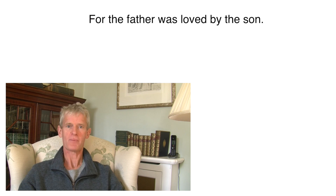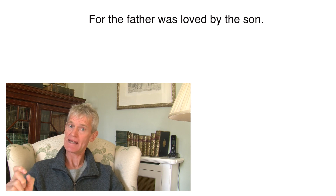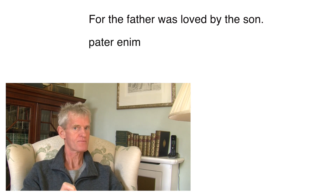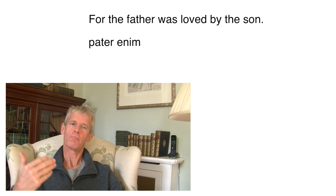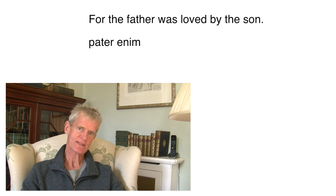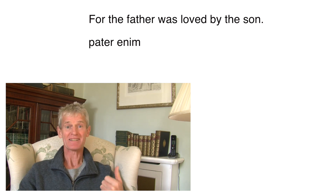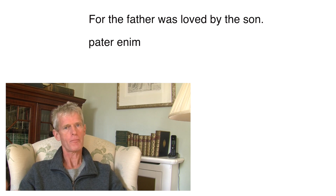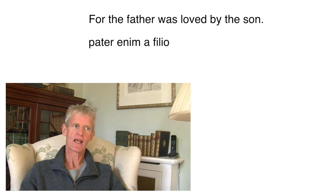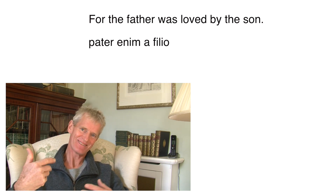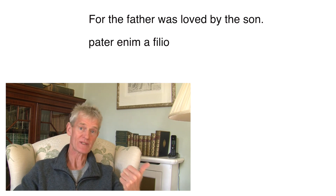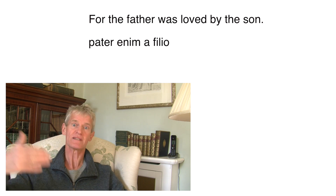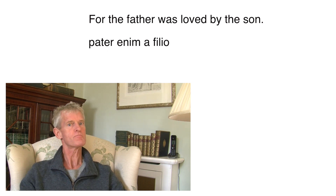'For the father was loved by the son.' Latin for 'for' is enim — but it always comes second word, not first. So: pater enim. Was loved — that'll go at the end. By the son — remember agents and instruments: if the person doing the passive verb is a person or animal, they are an agent and we use a preposition — a or ab. So: a filio. And 'was loved' — this is a continuous thing, he was loved on and on, so we need the imperfect passive of amo: amabatur. Pater enim a filio amabatur.